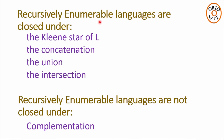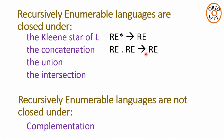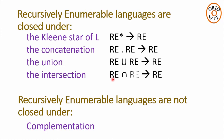Recursively enumerable languages are closed under Kleene closure, concatenation, union, and intersection. This means the Kleene closure of a recursively enumerable language is also recursively enumerable, concatenation of two recursively enumerable languages is also recursively enumerable, and similarly for union and intersection.